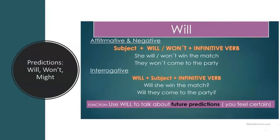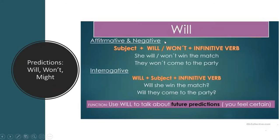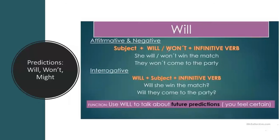Something that you think is going to happen in the near future or in a far away future — it doesn't matter. The function of will is to talk about future predictions that you are sure about. You feel certain that it is going to happen. Won't is the negative form, and it applies to the same situation — future predictions you are 100% sure about.